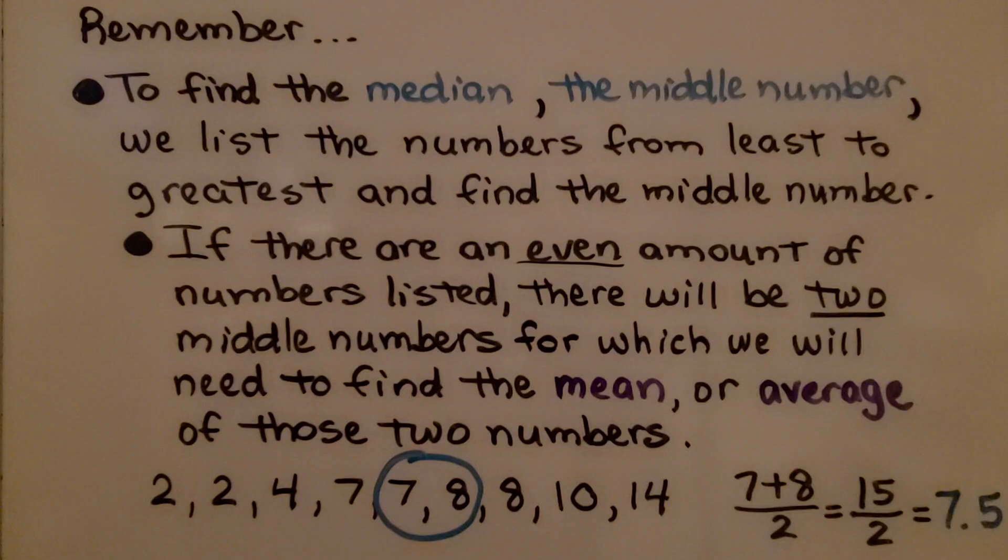And remember, to find the median, that's the middle number, we list the numbers from least to greatest and find the middle number. If there's an even amount of numbers listed, there will be two middle numbers for which we will need to find the mean or average of those two numbers.